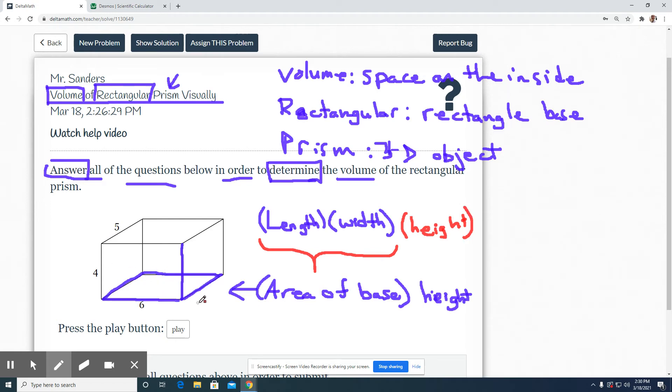Now I just want to clear some things up. Height would be how tall it is. Now length and width - a lot of students get this confused and it's a little bit tricky.